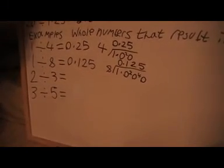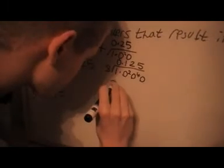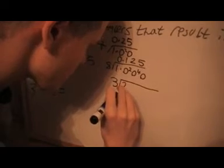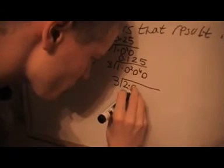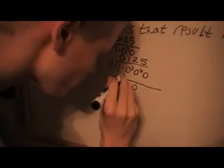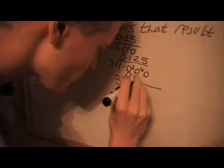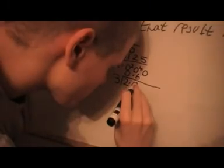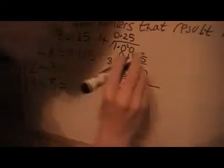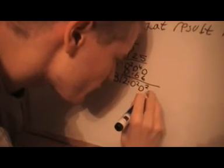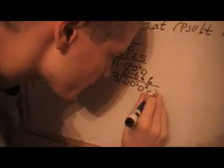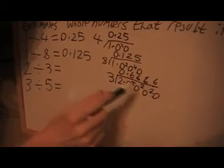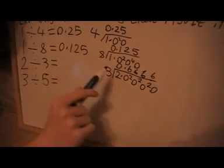Next one, something a bit different is going to happen. 3 into 2 doesn't go. 3 into 20 goes 6, and we'll get a remainder of 2. Then we get 3 into 20 again, that's 6, remainder 2. We'll get 6 again, and it's always going to leave remainder of 2, and it's always going to be 6. So this actually goes on forever and ever and ever. And that is called a recurring decimal.